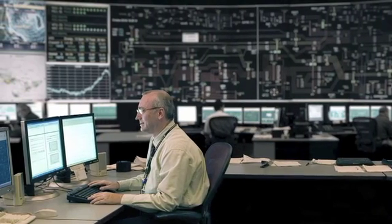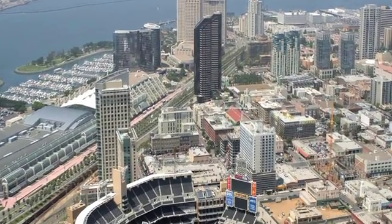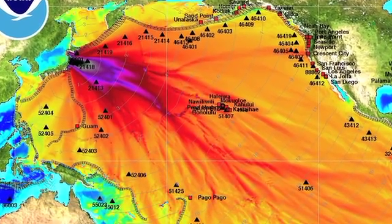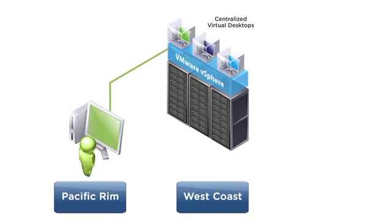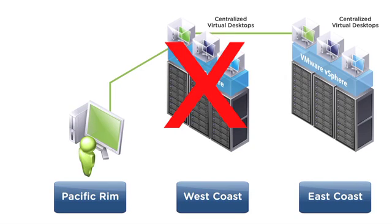There were emergency managers utilizing the solution to monitor these events as they were unfolding. In an entirely unrelated incident, the data center in Southern California that we were using to stream these virtual desktops to this user community in the Pacific Rim had lost power. This was completely unrelated to the tsunami event, but happened nonetheless at the most inopportune time. The solution performed as we had expected. We seamlessly failed over the services to our redundant data center on the East Coast, and were able to continue streaming those services to that user community so that they could continue to respond.